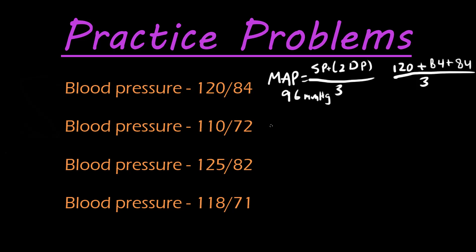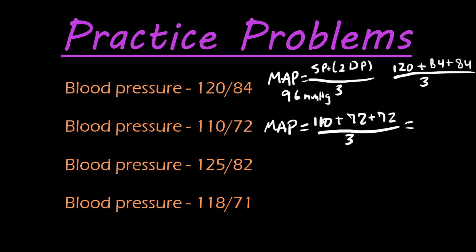Our next example — mean arterial pressure — we have the systolic, that's 110, plus two times the diastolic, all divided by three, and we get 84.66 repeating. So I'm just going to go ahead and round that to 85 millimeters of mercury.